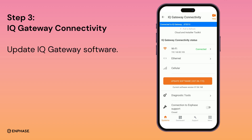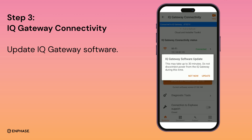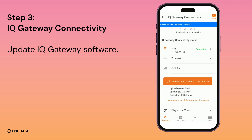Now click on the Update Software tab and wait for the complete package transfer from mobile to IQ Gateway. This process may take up to 30 minutes. Do not move your mobile away from the IQ Gateway or turn off the IQ Gateway power supply during this process.